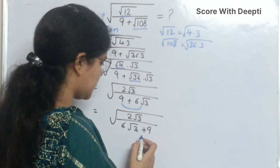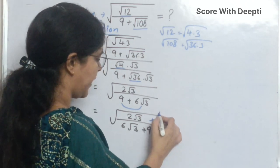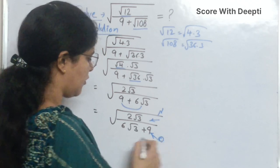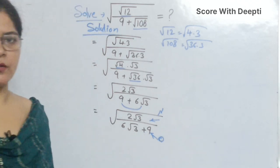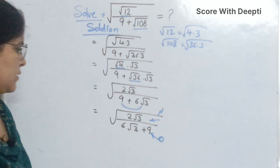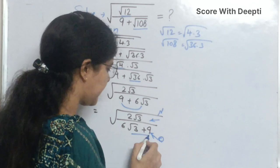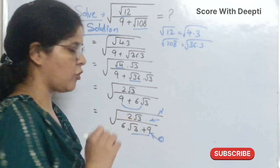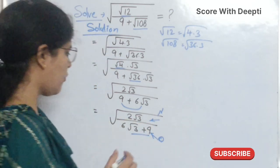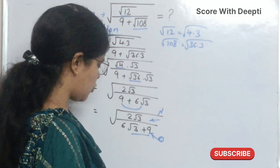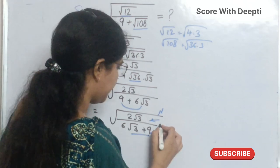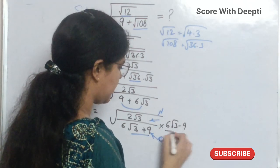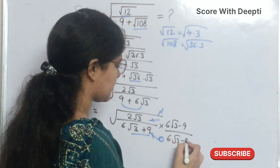Rationalize means we multiply numerator and denominator with the conjugate of the denominator. Conjugate means if there is a plus sign in two terms, we multiply numerator and denominator with the minus sign version of those two terms. So we multiply by 6 square root 3 minus 9 over 6 square root 3 minus 9.